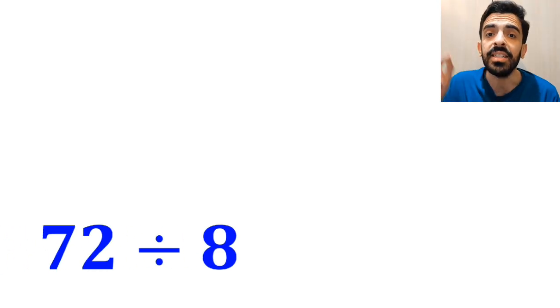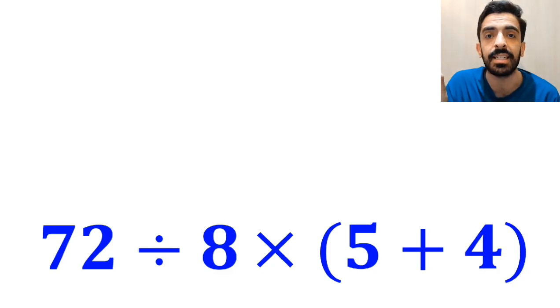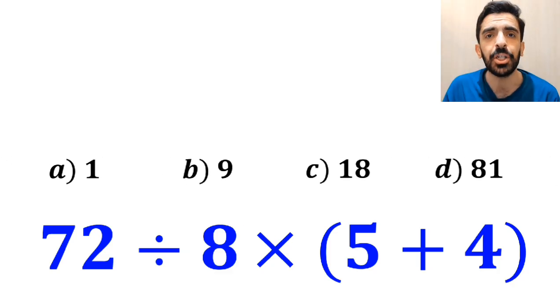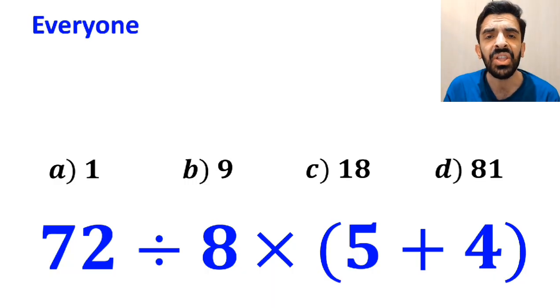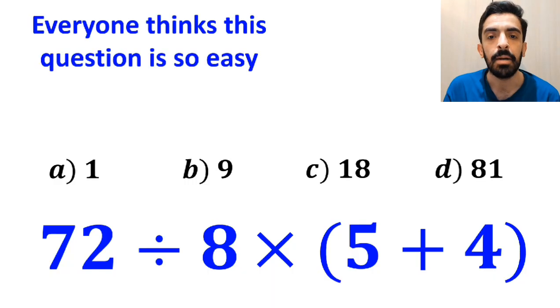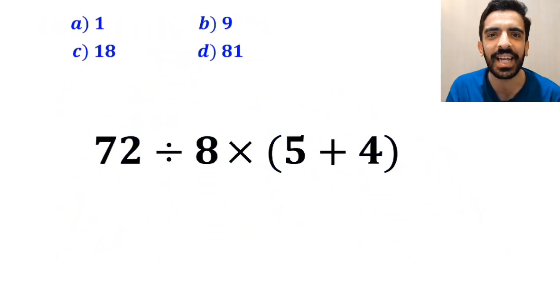What is the value of the expression 72 divided by 8 times open parenthesis 5 plus 4 close parenthesis? Which option do you think is the correct answer to this question? Everyone thinks this question is so easy, but it actually tricks a lot of people.